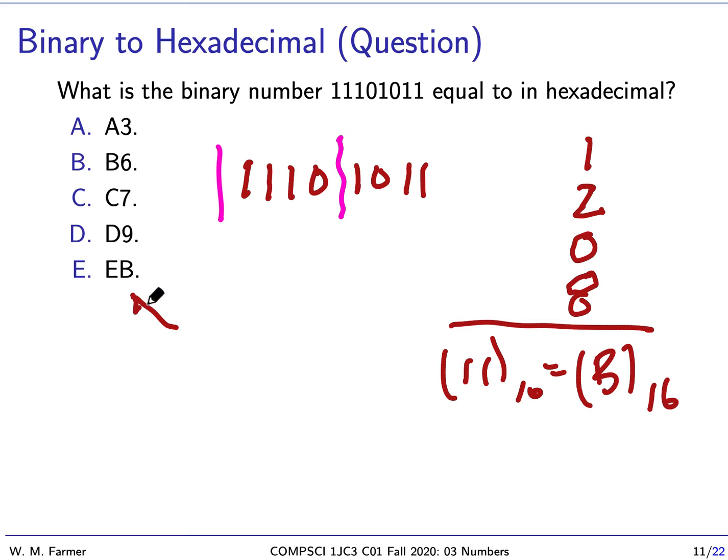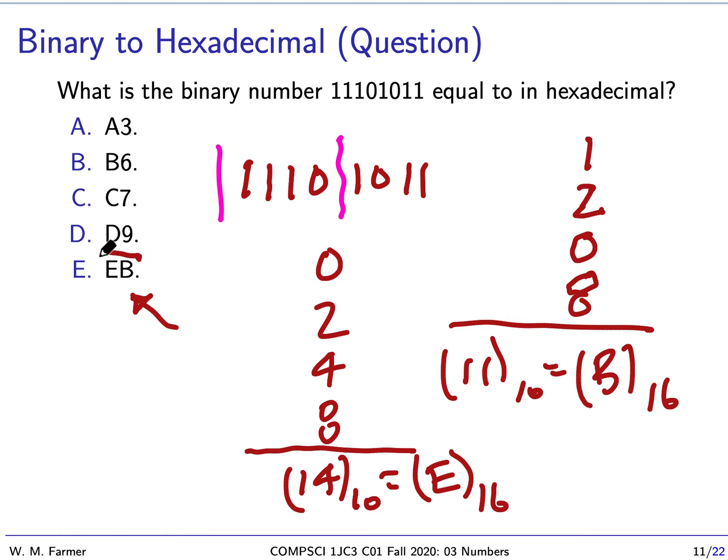Let's do this one now. This should be zero plus two plus four plus eight. We add those together and we get 14. 14 in base 10 which equals e in base 16. That means this is the correct answer, EB.